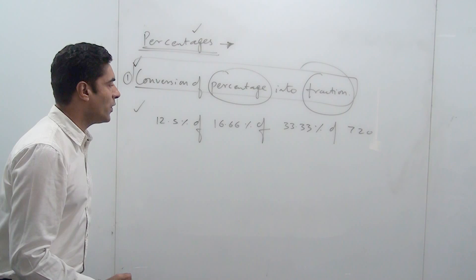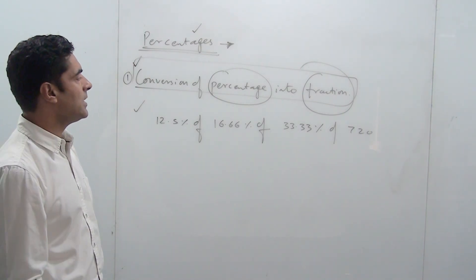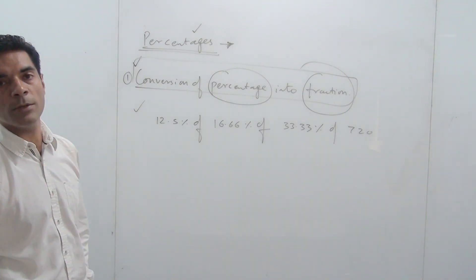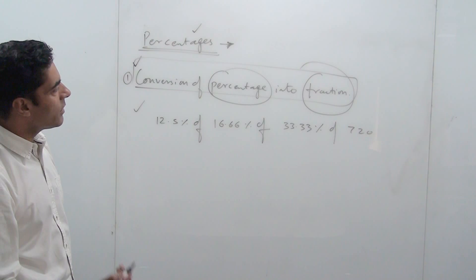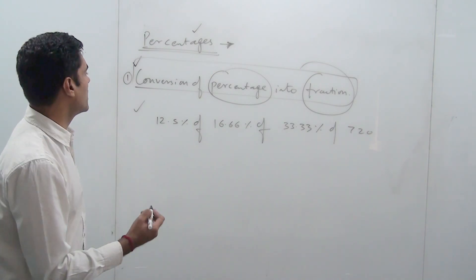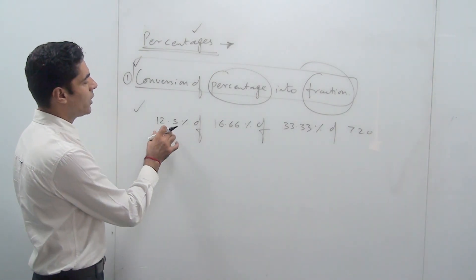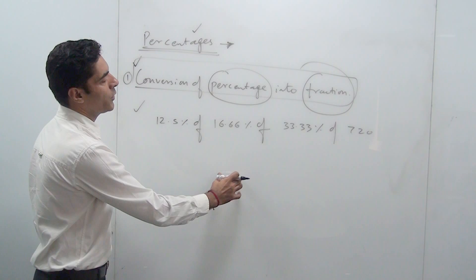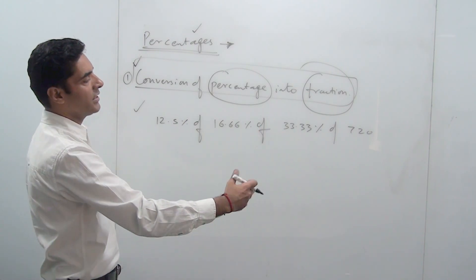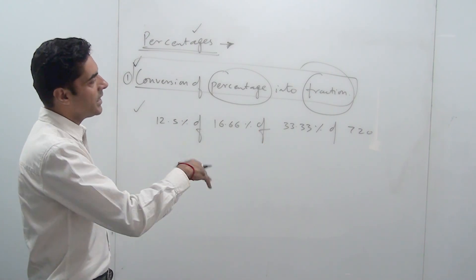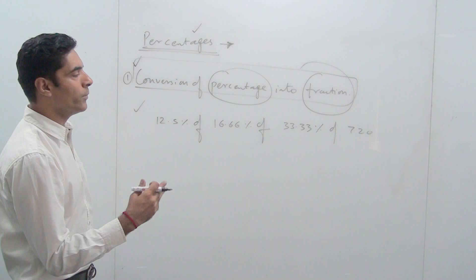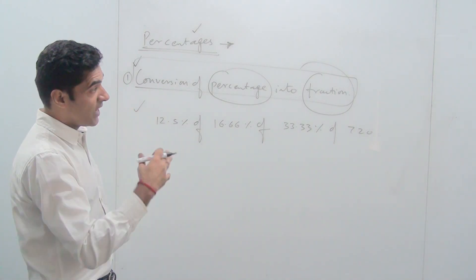If you are supposed to find 12.5% of 16.66% of 33.33% of 720, one approach is the conventional approach wherein you write this as 12.5 divided by 100 times 16.66 divided by 100 times 33.33 divided by 100 times 720, and then start cancelling the numerator and denominator, which is not the preferable way of doing things in a competitive examination.